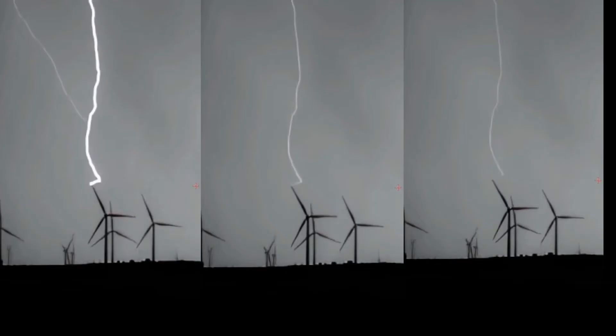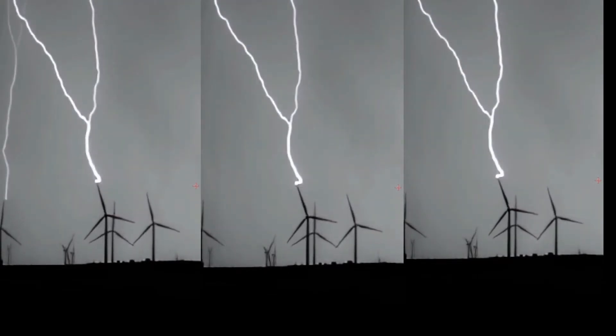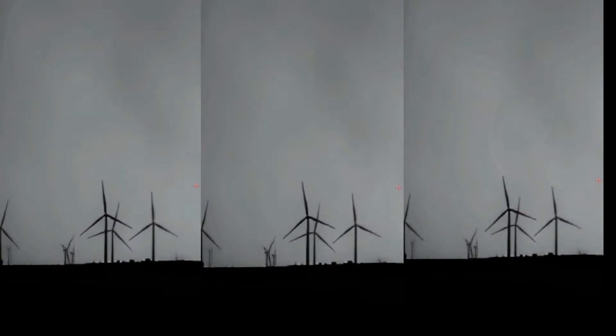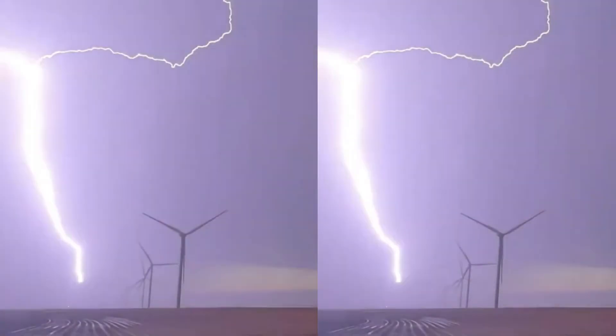Lightning strikes can cause structural damage to the blades, resulting in catastrophic failure and long-term outages.